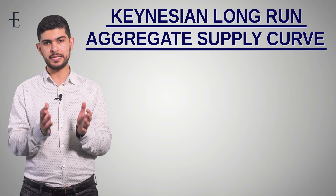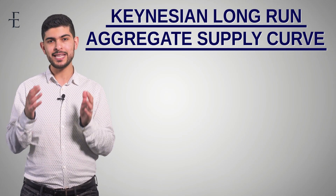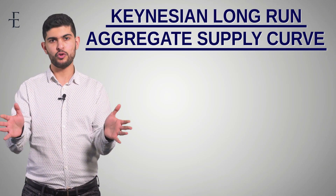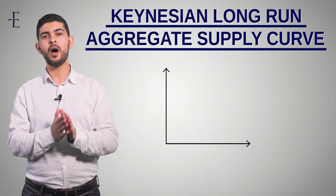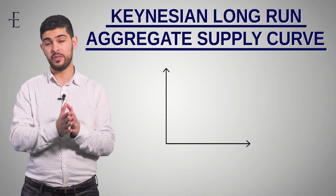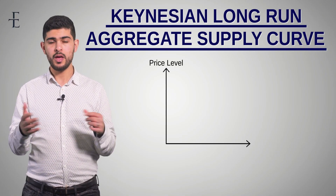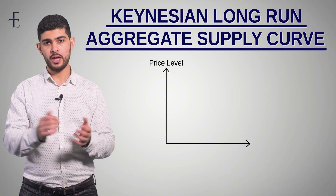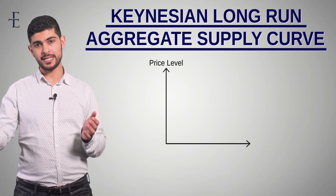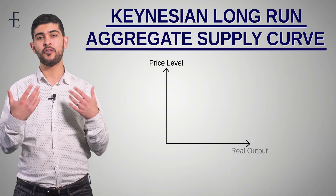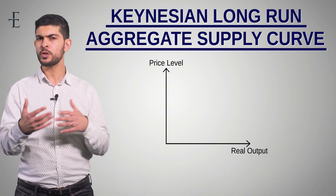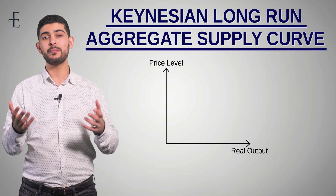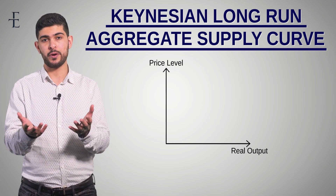What I want you to understand is that there are three sections on the LRAS curve. On the y-axis we're going to have the price level, which is basically a measure of inflation, and on the x-axis we're going to have real output — you can also write real GDP — and that is a measure of economic growth.